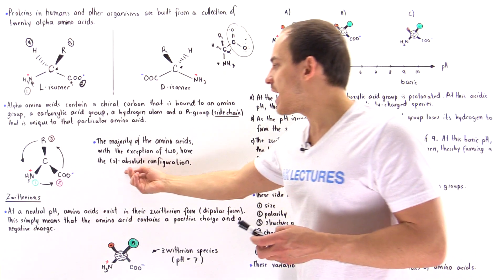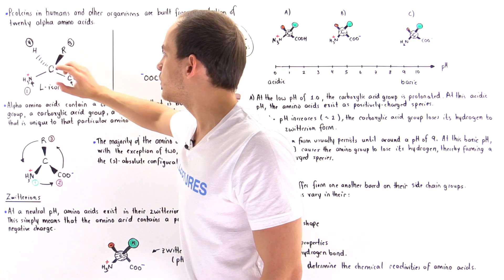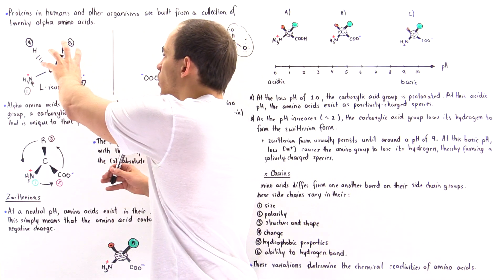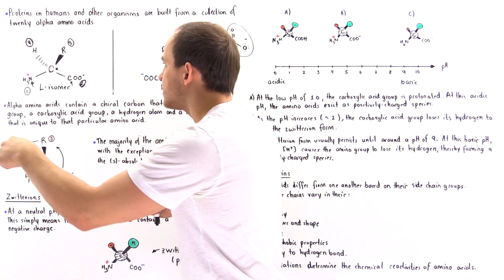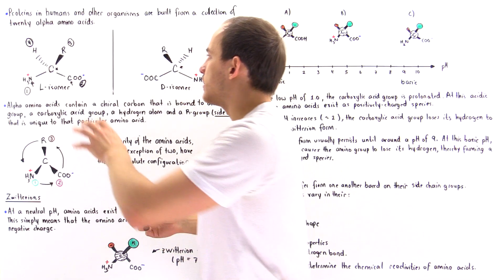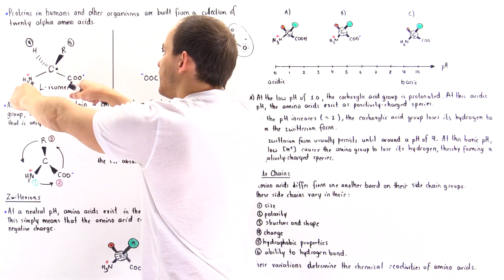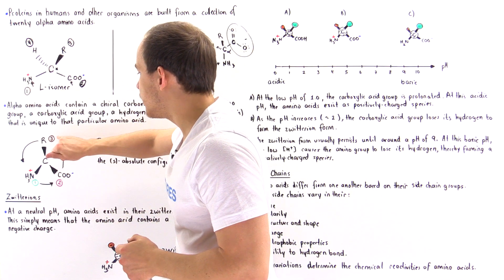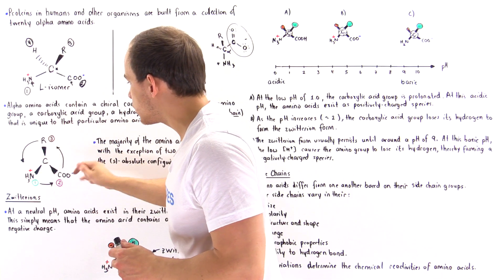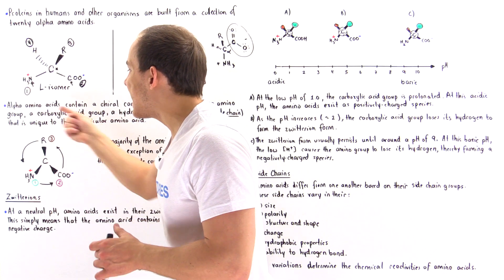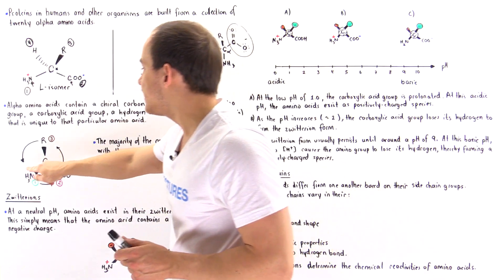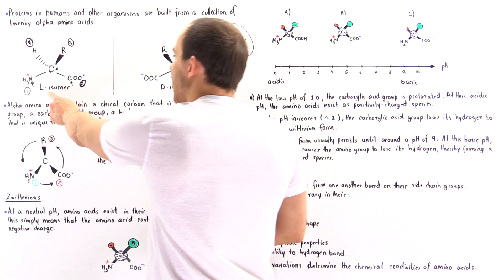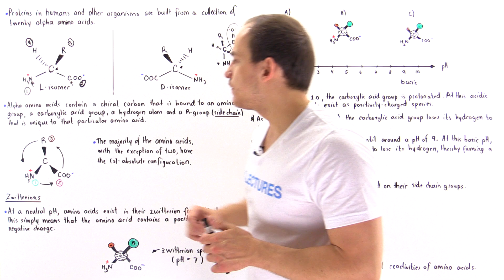To determine R or S absolute configuration, we orient the molecule so that the fourth-priority group (H) points into the board. Then we follow the order from group one to two to three and draw an arrow. If the arrow points counterclockwise, the configuration is S; if clockwise, it is R. The majority of L-isomers in our body have the S absolute configuration.